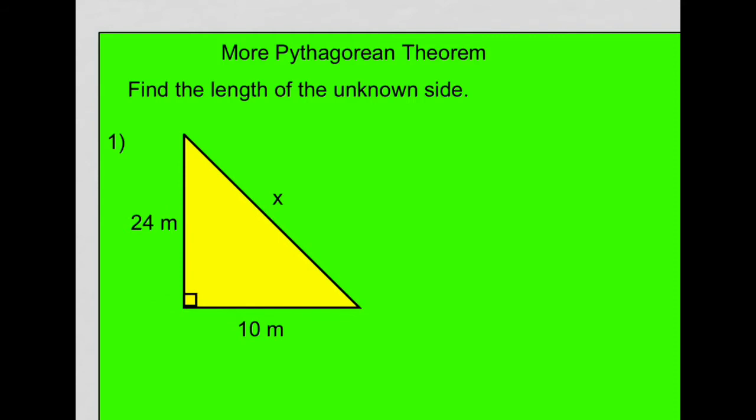Remember, the right angle will always be an angle that makes an L shape or a 90 degree angle. So there's your right angle, and the hypotenuse is always opposite the right angle. So in this case, we know we're missing the hypotenuse.